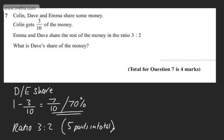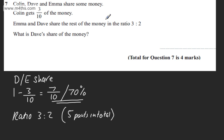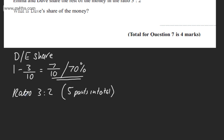So just jotting this down. Therefore, if I look at Dave, Dave is going to have two of the five parts. So therefore, Dave will have, and we don't need to write this out, I'm just showing it step by step, two fifths of the seven tenths.